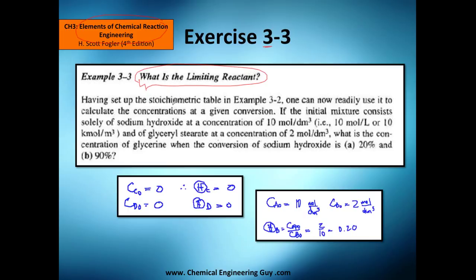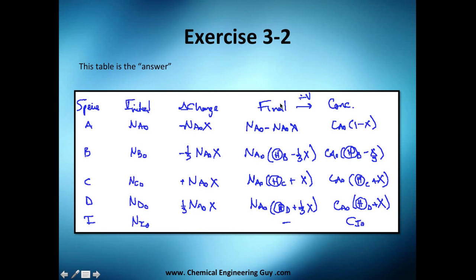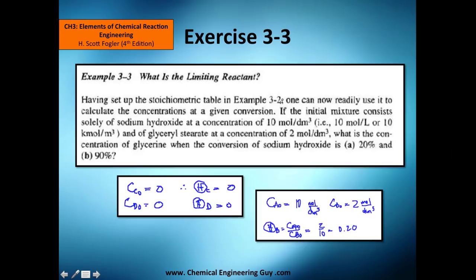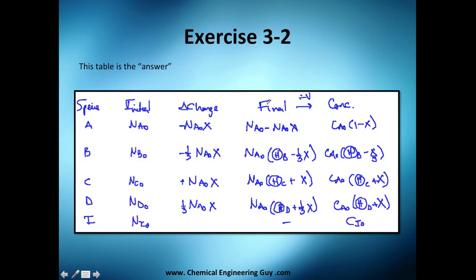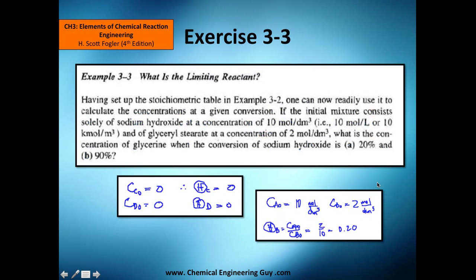Having set up this stoichiometric table in example 3-2, which is this one, this table is the one they are talking about. One can now readily use it to calculate the concentrations at any given conversion. If I give you conversion, I can get the concentration of A, B, C, and D at any moment.